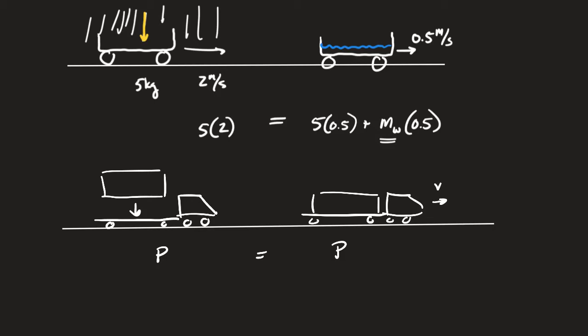An AP-style question might present a case you've never seen. For example: we live in Florida and rain can come in sideways. Would that affect the answer? Yes — if the rain is coming in sideways, the raindrops have horizontal momentum when they hit. They are going to add that horizontal momentum to the system. The first thing you should be able to do is think outside of these standard problems.